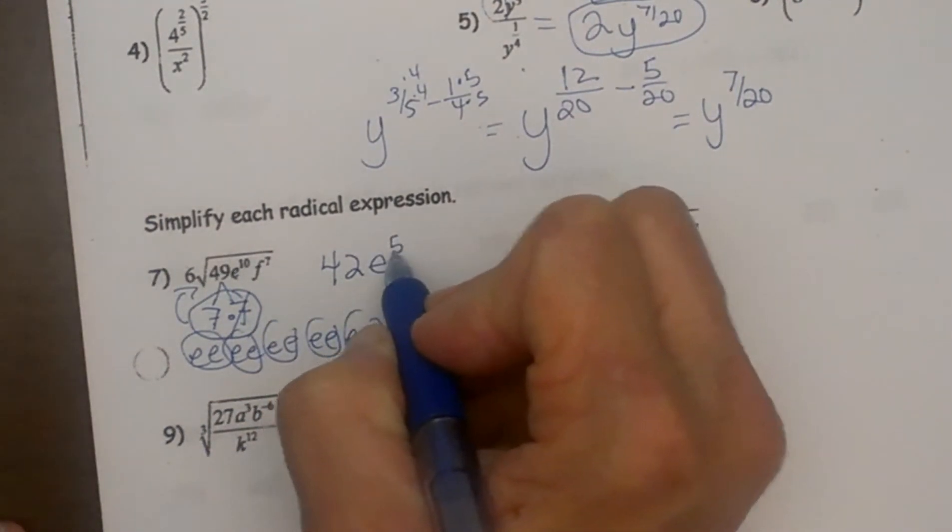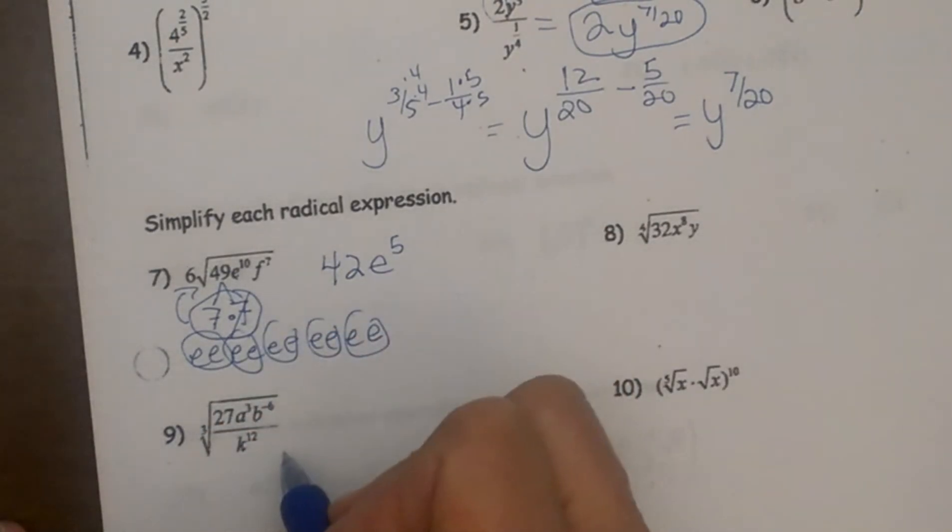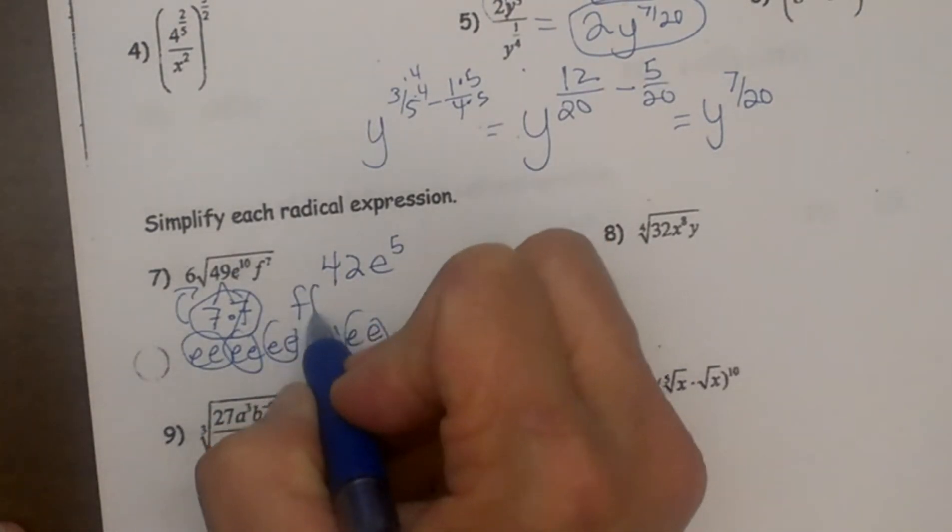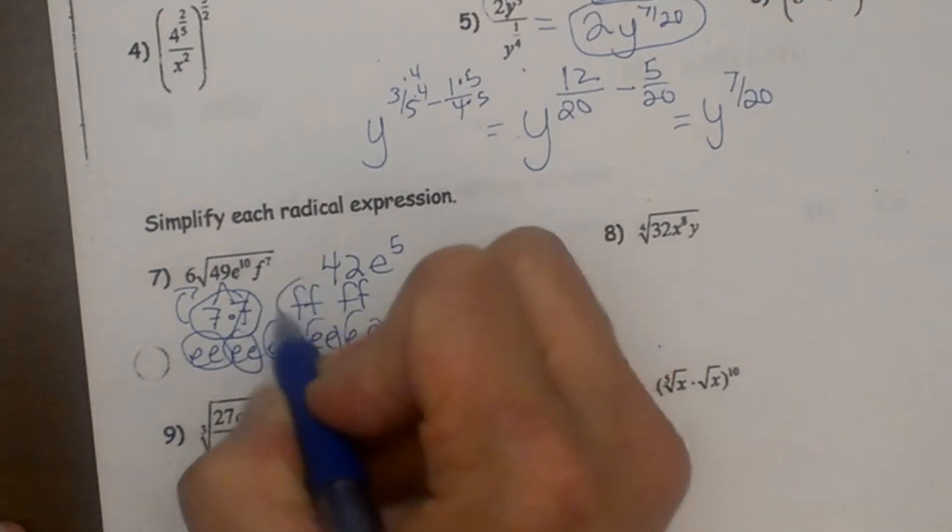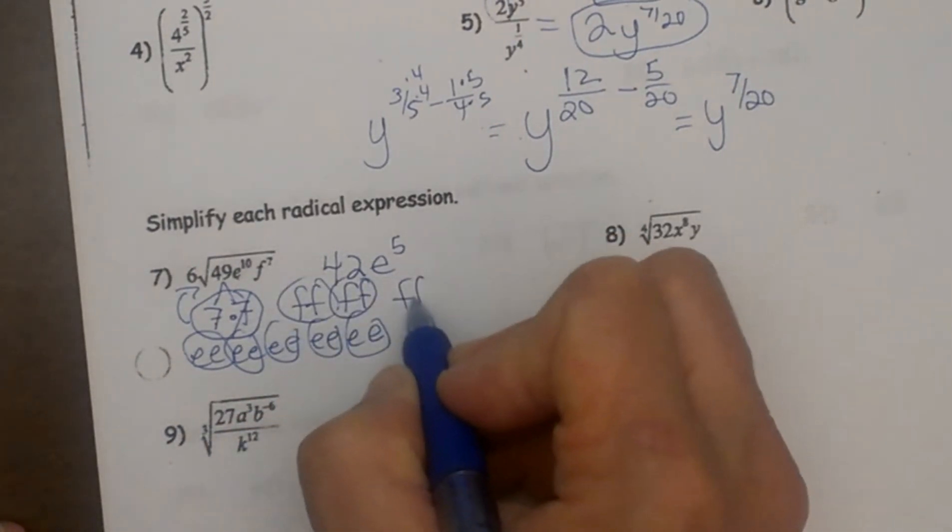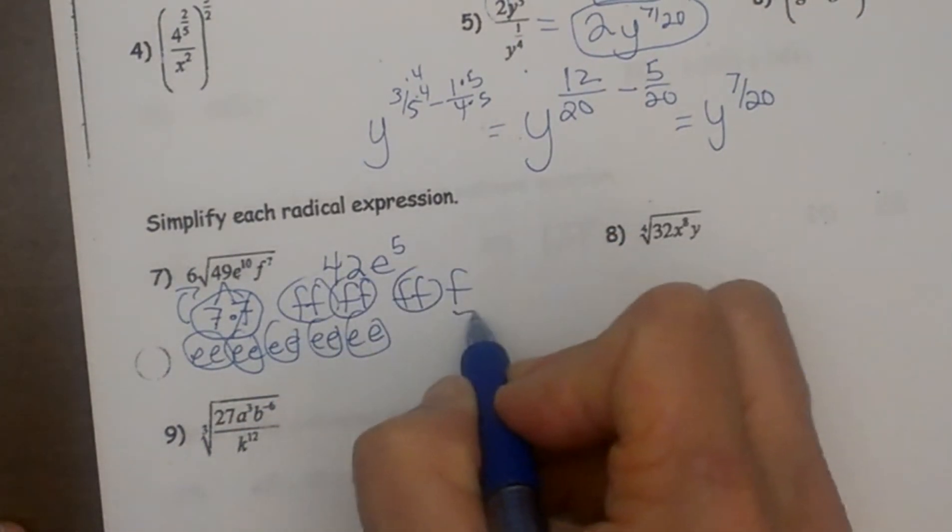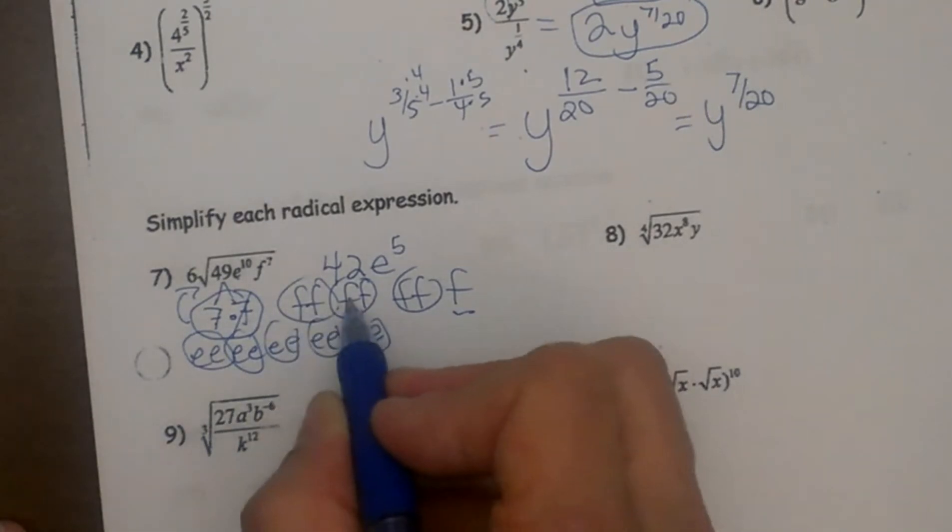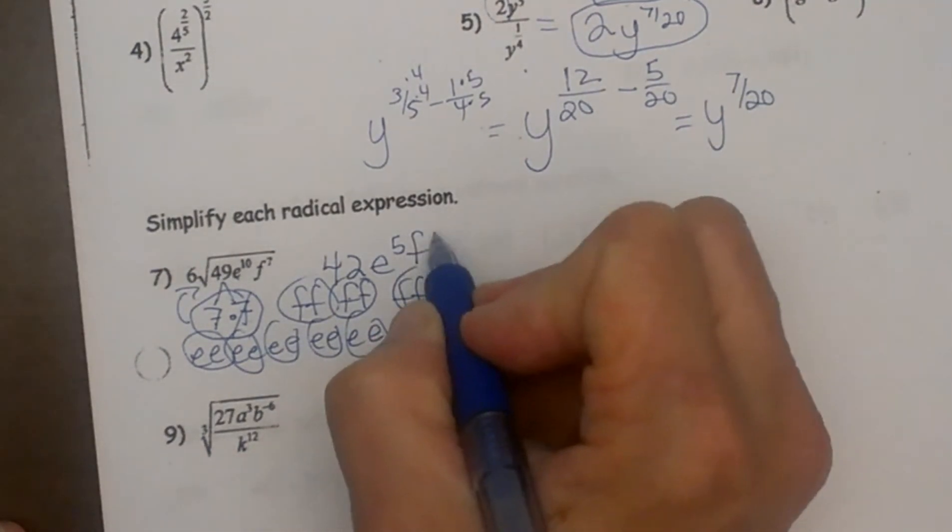So I am going to bring out e to the 5th power. And then f to the 7th, let's think about that. I have 2, 4, 6 with 1 left over, 7. So I am going to bring out 1, 2, 3 f, so f cubed.